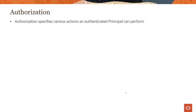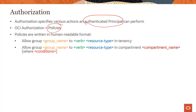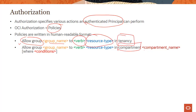Authorization basically specifies the various actions an authenticated principal can perform. Once you authenticate somebody, what actions can she perform in the system? Authorization in OCI is done by writing policies. Policies are written in human-readable format — you say 'allow group,' never 'deny group.' Everything is denied by default — that is the security principle of least privilege, a zero-trust model. You allow a group name to perform a verb on some resources in your tenancy or specific compartments, and you can make these conditional.